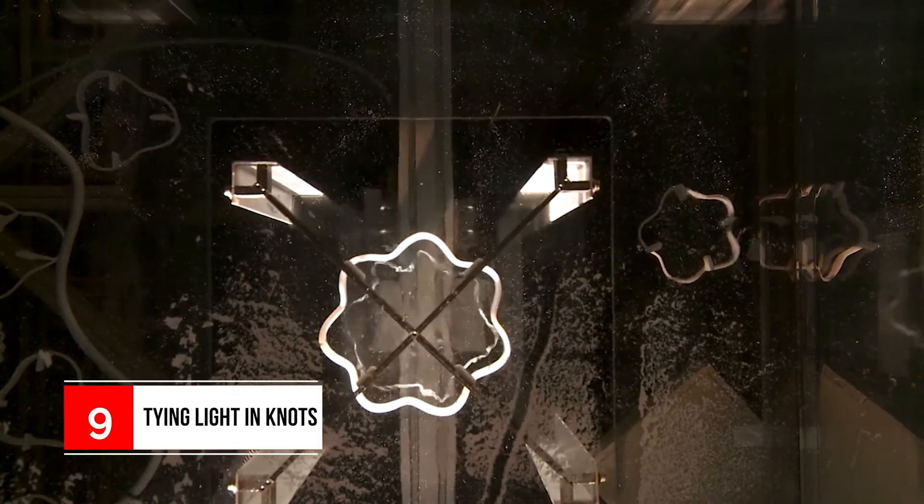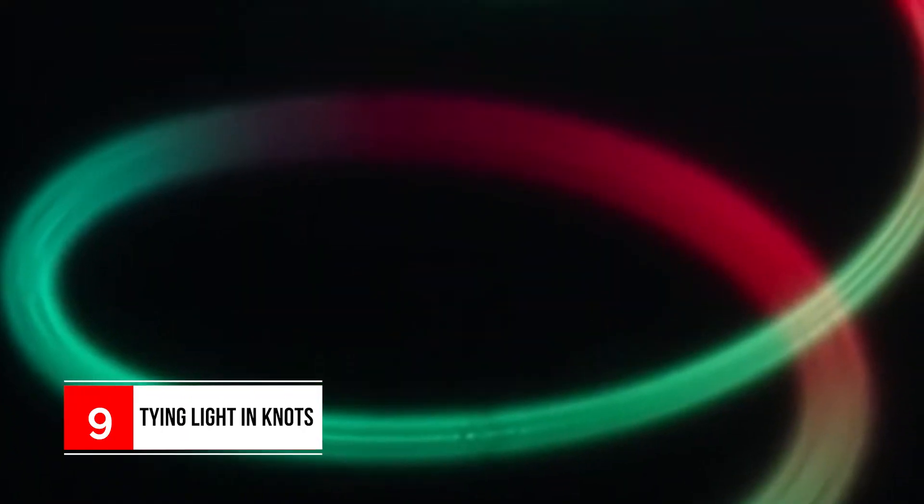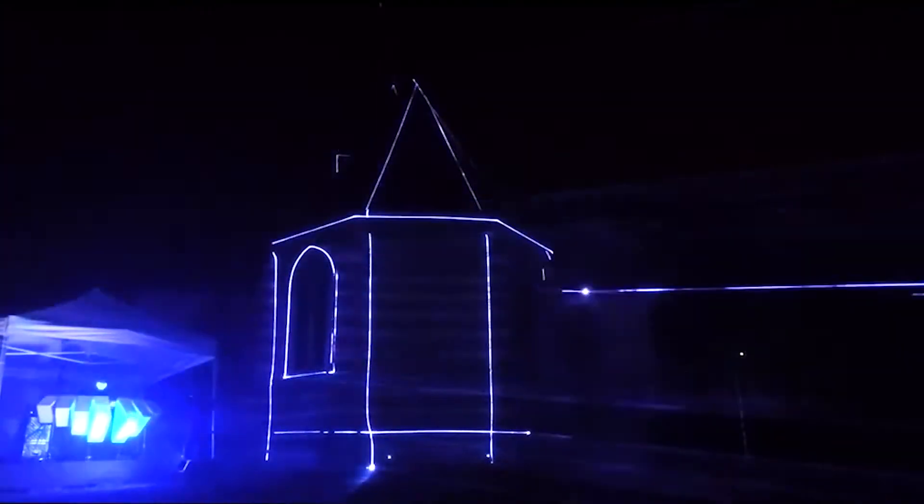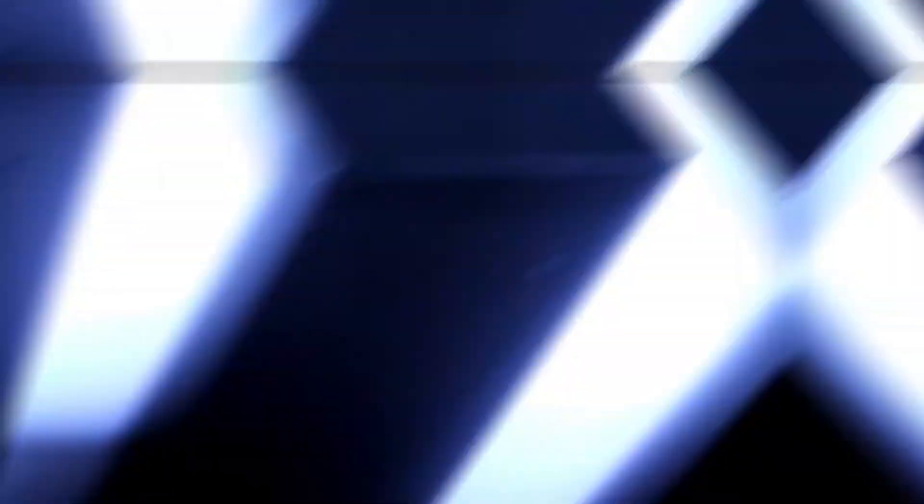Number 9: Tying Light in Knots. A single point was dragged sequentially through all of these image points. According to everything we know, light is supposed to move in straight lines. A few scientists were the first ones to tie light into knots, something that was only thought of as an abstract mathematical concept before.